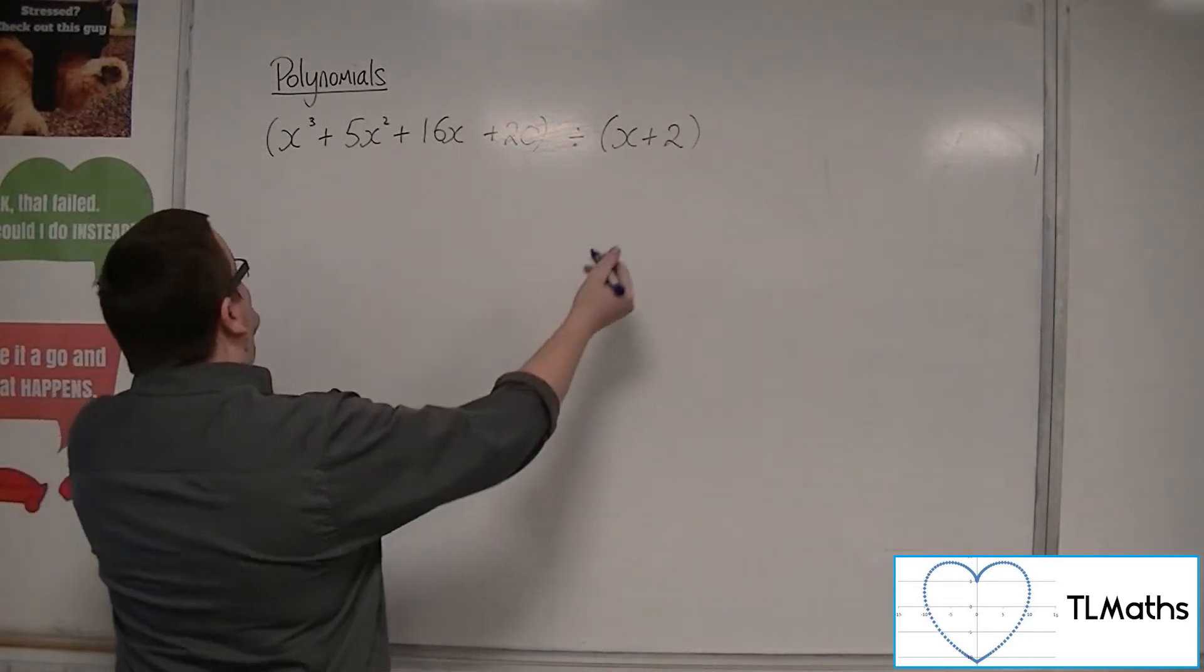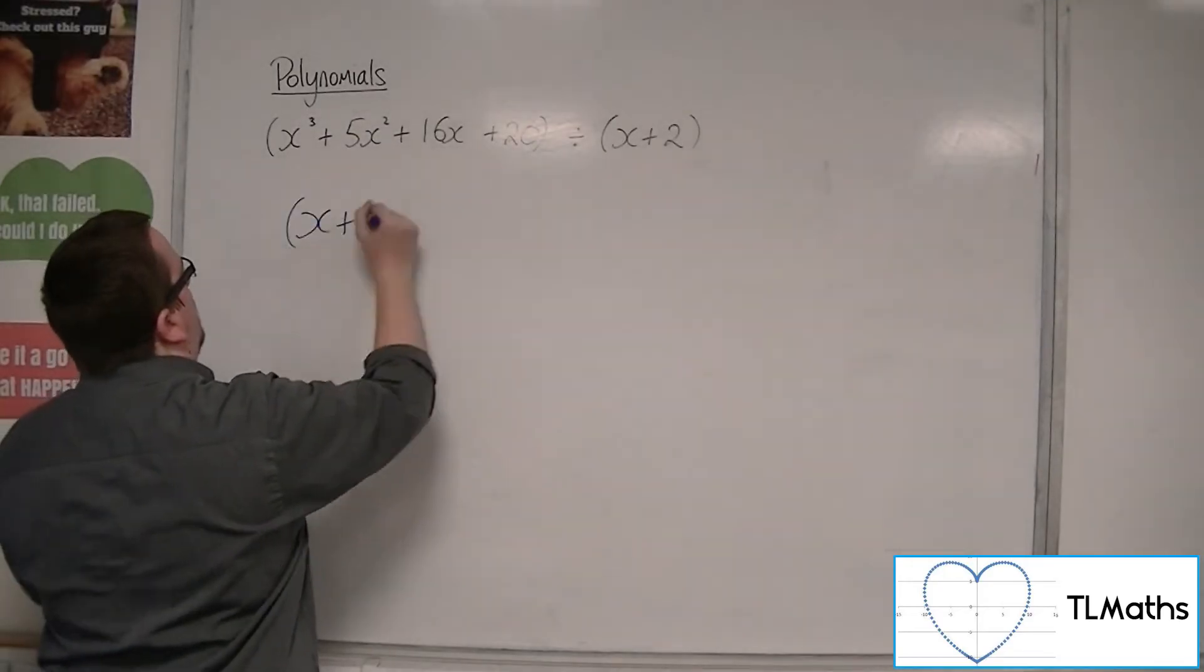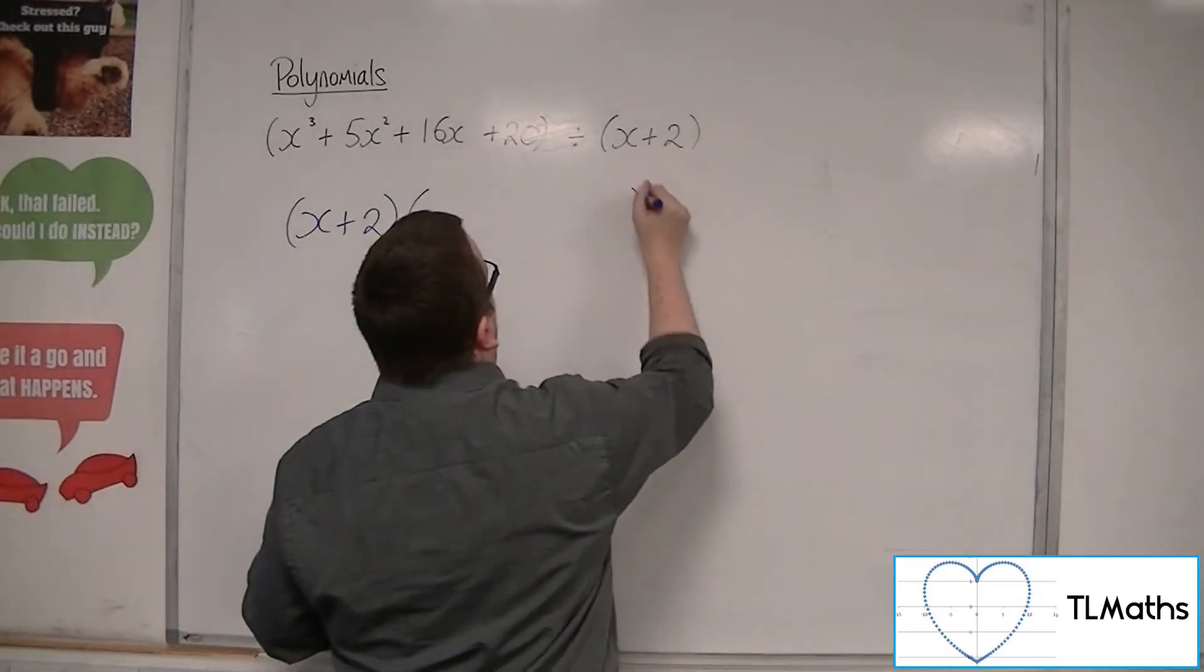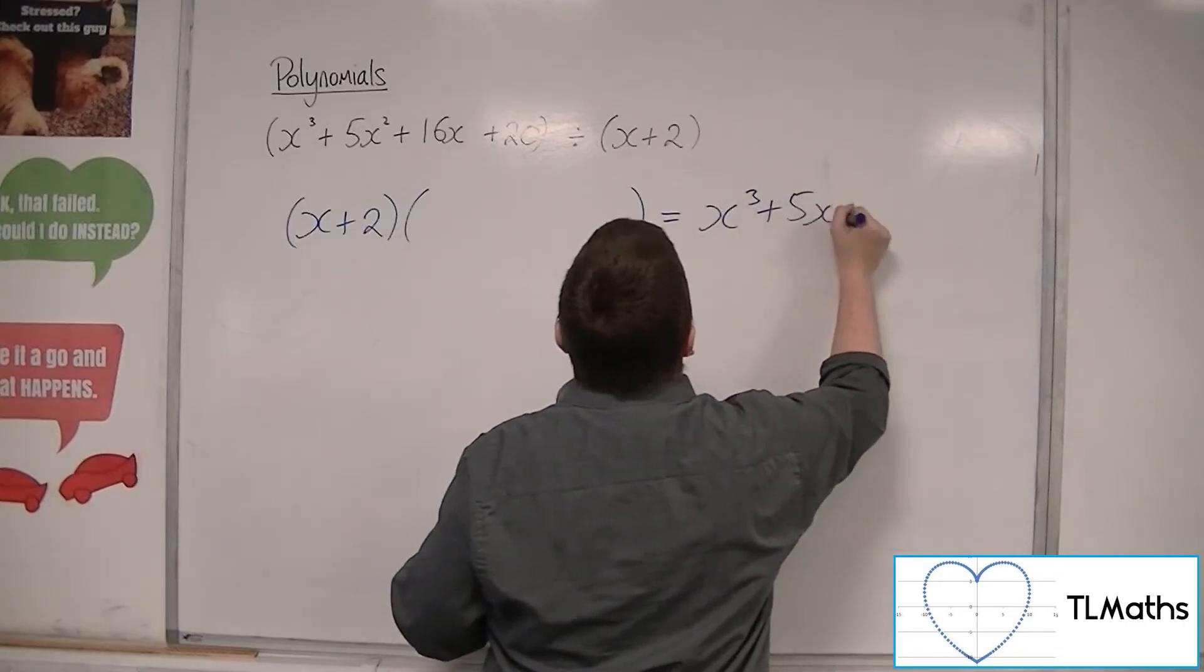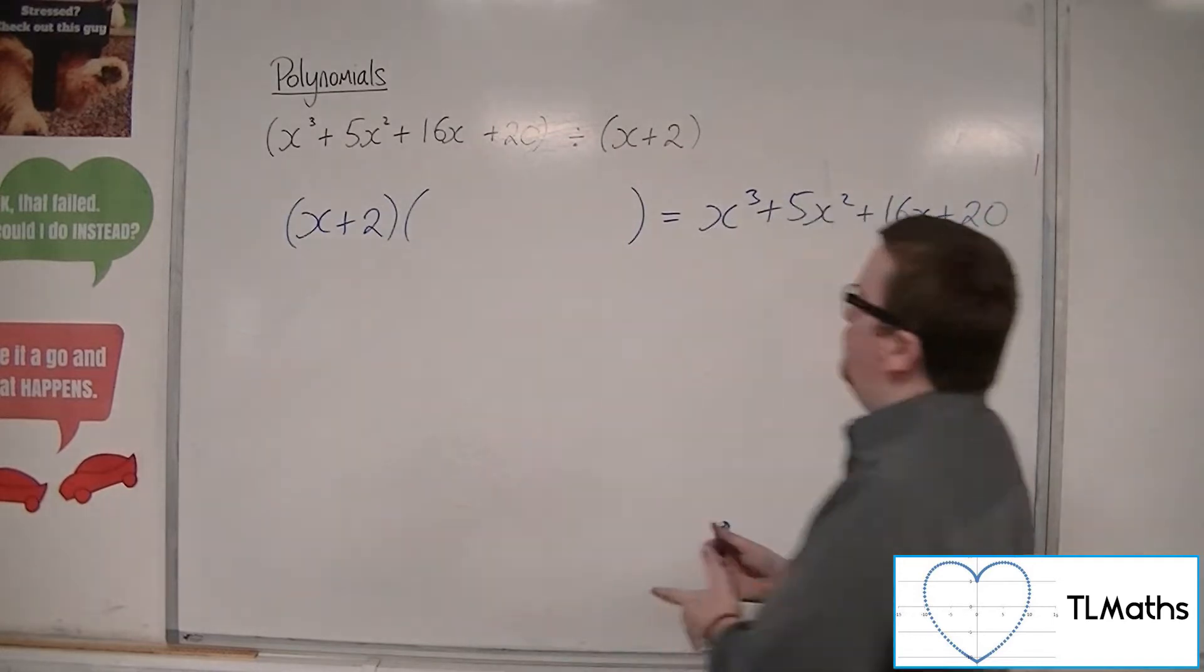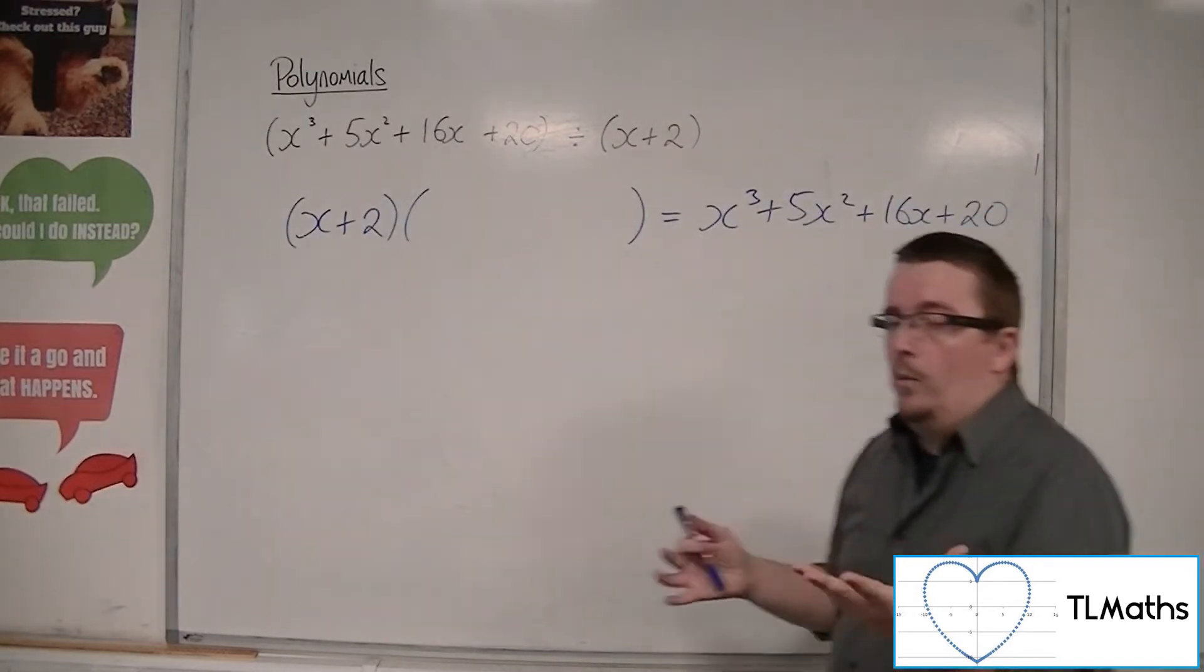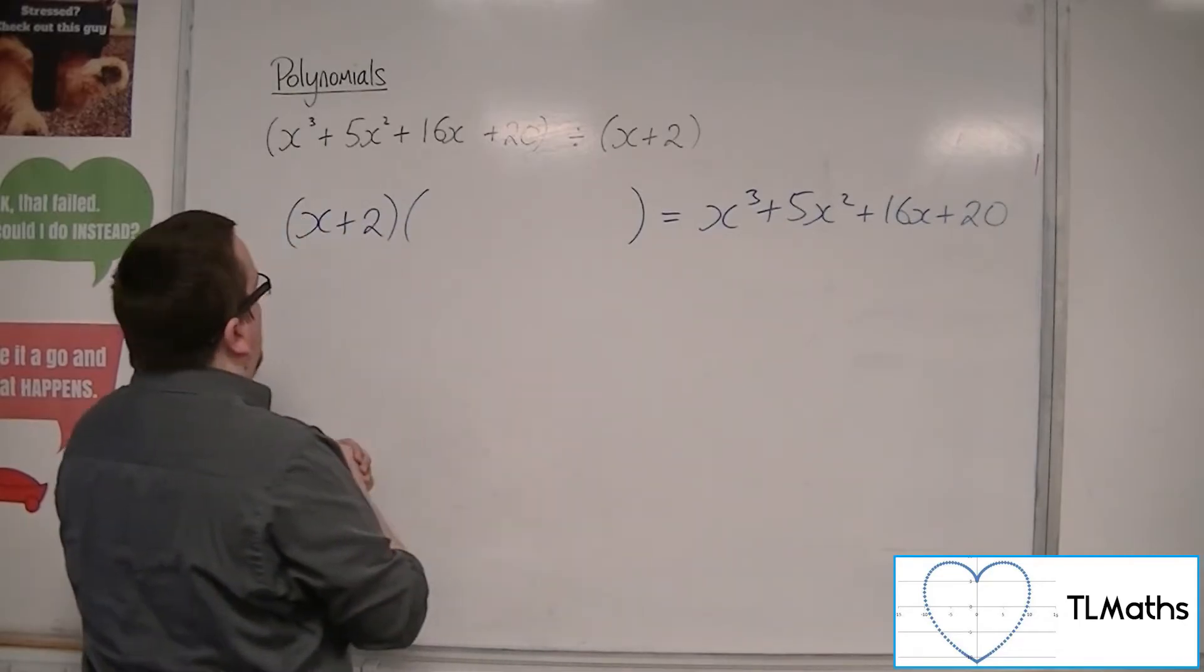So what we need to do is we're saying to ourselves that x plus 2 multiplied by something must be equal to x cubed plus 5x squared plus 16x plus 20. That's really what we're saying to ourselves. So what must go in that bracket?